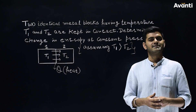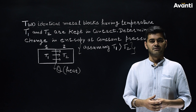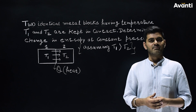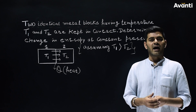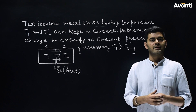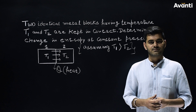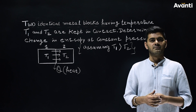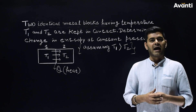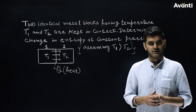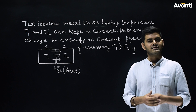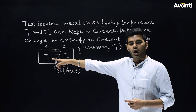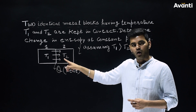Let's take an illustration. Two identical metal blocks having temperatures T1 and T2 are kept in contact. In this question, we have to determine the change in entropy at constant pressure. As you can see, there are two blocks: block 1 and block 2.